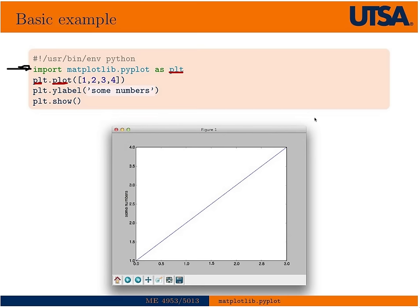So it's just PLT plot. In this case, we'll just plot the array 1, 2, 3, 4, and give it a Y label. And then the only thing that you have to do that's different is you have to explicitly put this show command there.